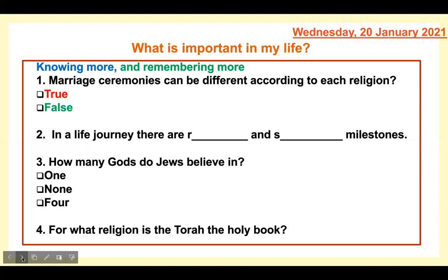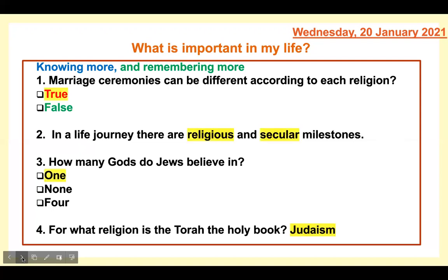Once you've done those, get yourself a different colour pen or pencil and get ready to tick and fix. This might be a good time to pause if you need more thinking time. Here come the answers. True — marriage ceremonies can be different according to each religion. Question two: in a life journey there are religious and secular milestones. I will give hub points to anyone who can give me an example of a religious and/or a secular milestone — pop it in the chat next time you have a live lesson. Question three: Jews believe in one God.